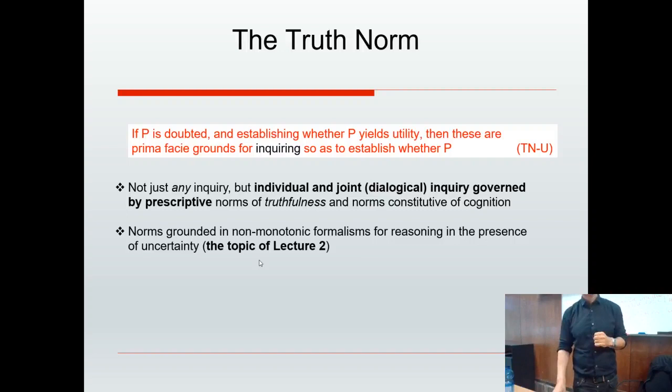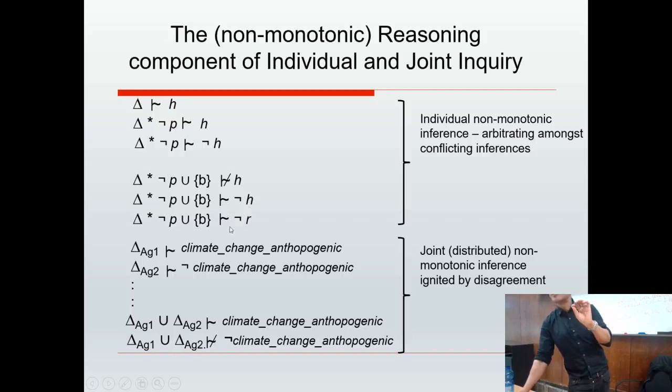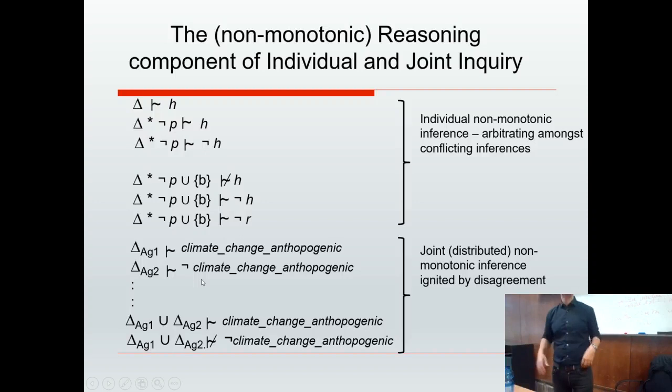So we've got this example of an individual inquiring. They believe their partner is at home. They revise their beliefs: water is not on the table. Now they have 'at home' and 'not at home' as two conflicting non-monotonic inferences. They look to their calendar — it's their partner's mother's birthday — so they arbitrate in favour of their partner not being at home. This generates a new experiential prediction that there will be no response when you call out the partner's name. Then we've got joint distributed inquiry about the truth of climate change being anthropogenic.